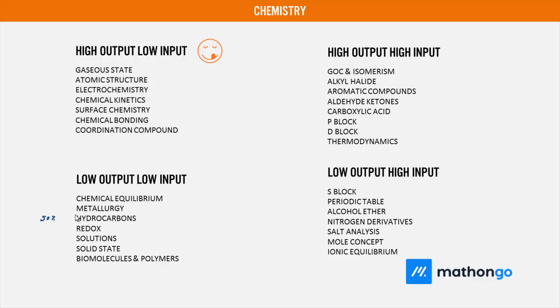Whereas low output high input - the probability of questions in the paper is less, but input is much more. S-Block - P-Block is high output, but S-Block generally gets questions on and off. Periodic table, alcohol, ether, nitrogen derivatives. Carboxylic acid, nitrogen - generally questions come on and off given the trend of last 10-12 years. Salt analysis, mole concept. Because mole concept is a very basic thing, but it's a high input game. You have to work hard on basics. And rotational motion you have to do in physics and chemistry both.